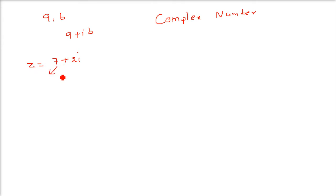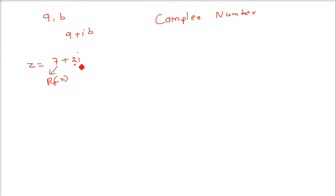This part is called the real part — we write it as Re(Z). And this part, this 2, includes the sign also, and it is called the imaginary part. We write it as Im(Z).